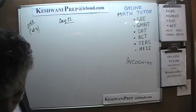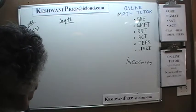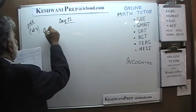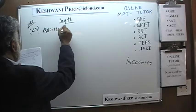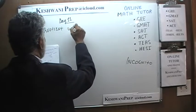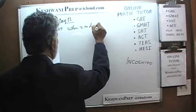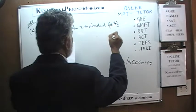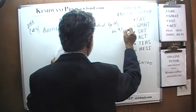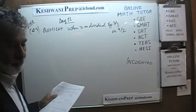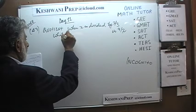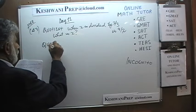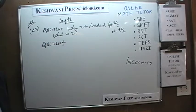Number 43 is going to require some explanation, so be patient. It says: the quotient when x is divided by two-thirds is nine halves. The question is: what is x?